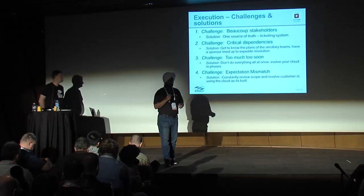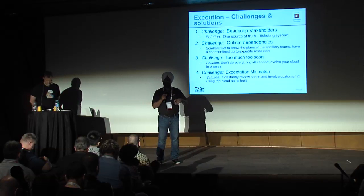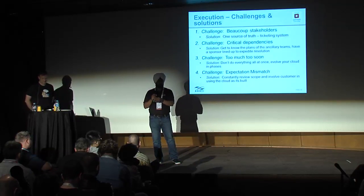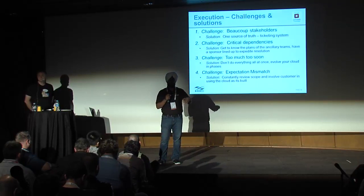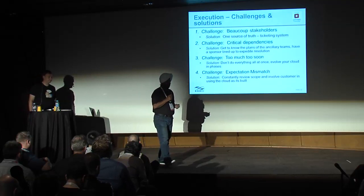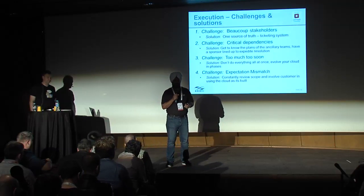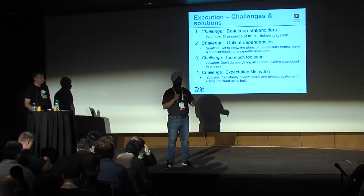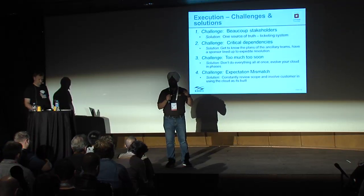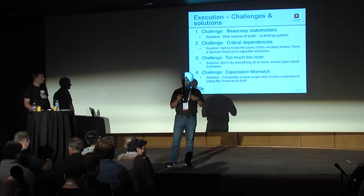Don't do too much too soon. Don't be ambitious about the MVP. Demonstrate stuff first, make small things work, take out the risk, and do this in phases — you have an opportunity to re-plan every time and see what your velocity is. You want to do everything at once with a transformative change. Don't do it, that is going to cause a lot of pain. On expectation mismatch — this seems magnified by cloud because so many people are interested in the transformation.